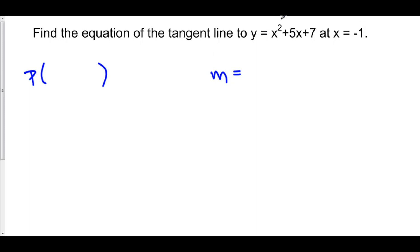We can plug this into y to figure out what our y value is. So our point is at negative 1. Negative 1 squared is 1, minus 5 is negative 4, plus 7 is 3. So our point is negative 1, 3.